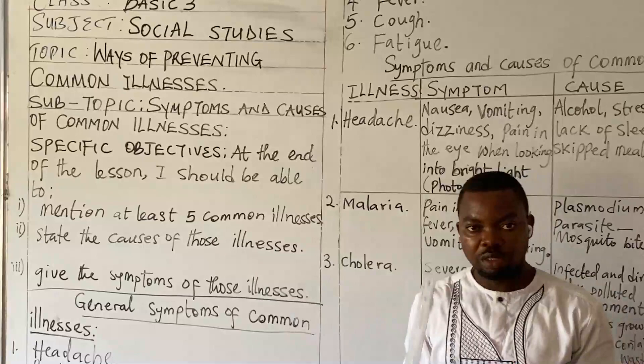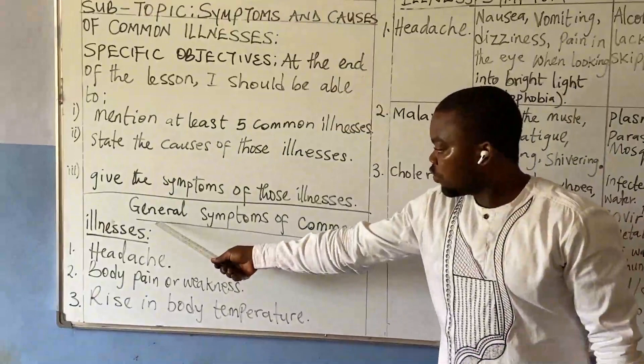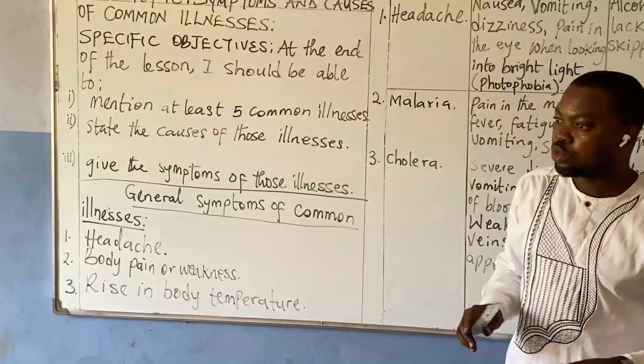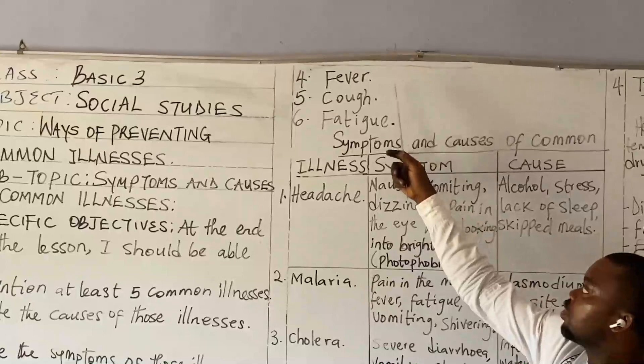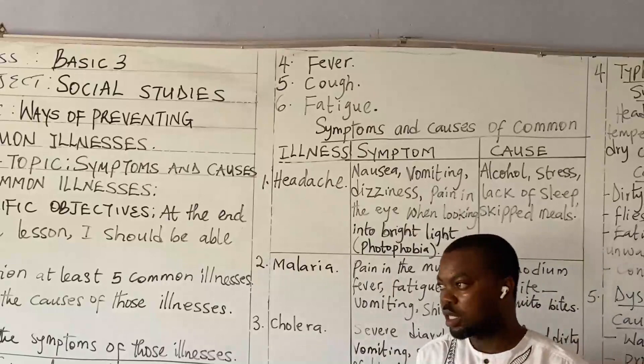The ones we mentioned, right? So we have general symptoms of common illnesses. For all illnesses, you start experiencing headache, you have body pain, weakness of the body, rise of body temperature. We also have fever, cough, and fatigue.